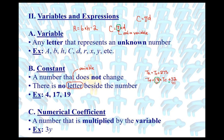An example would be 3y. Any time you have a number sitting directly beside a variable, we never show what operator connects them — the implied operation is always multiplication. So 3y would be 3 times y. In this case, 3 is your numerical coefficient because it's attached to the variable through multiplication, and y would be the variable.